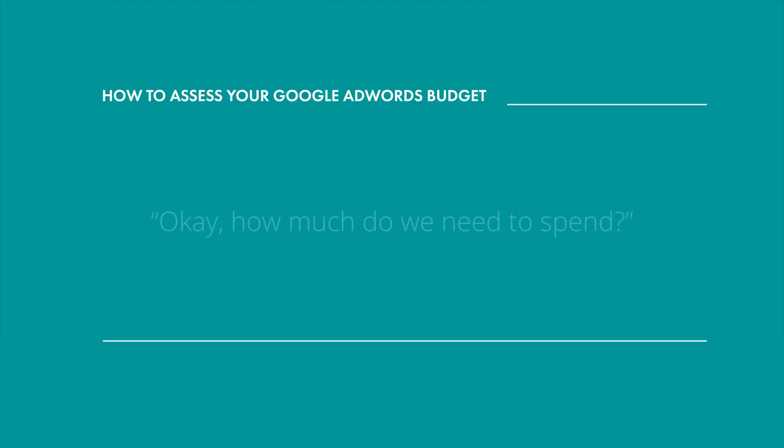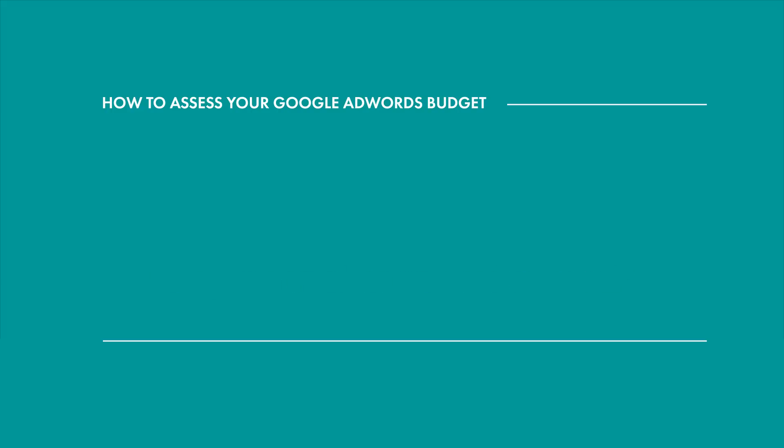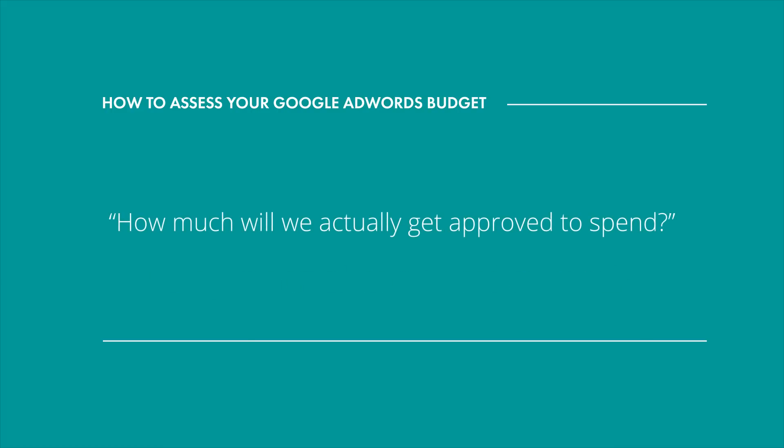One of the common things we see is someone goes into an AdWords campaign for the first time and they're really trying to decide how much do we need to spend. But then there's always that really difficult underlying conversation of how much will we actually get approved to spend. And so there's a fine line between how much you need to spend and how much you're approved to spend. It's really important to understand those differences when you go into it. What you don't know going into it is any of the real information, so when you're reassessing your AdWords budget, there are some things you really need to look at.